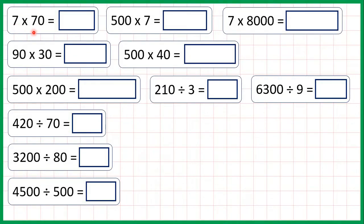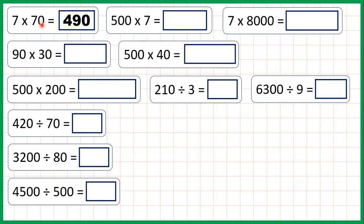7 times 70 is 490, because 7 times 7 is 49, and then if we have an end zero in a multiplication question, we need an end zero in our answer.